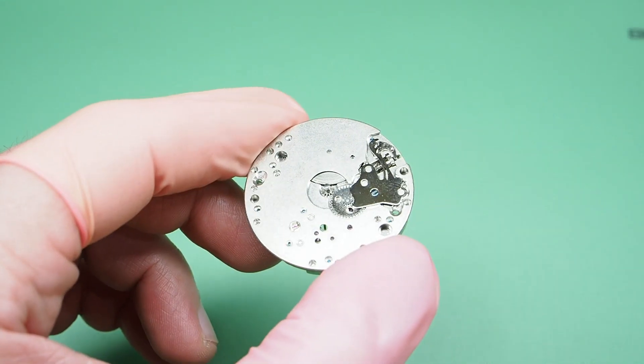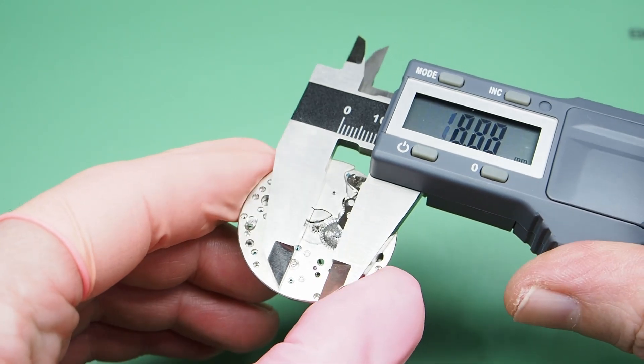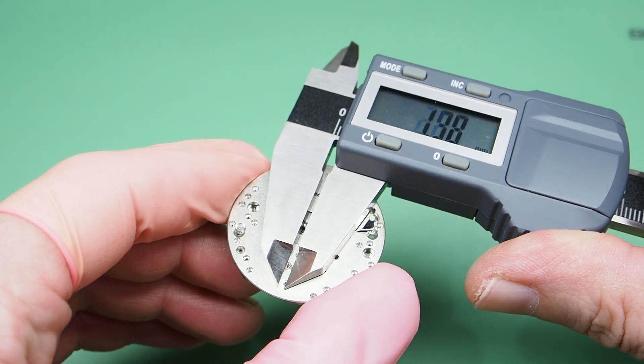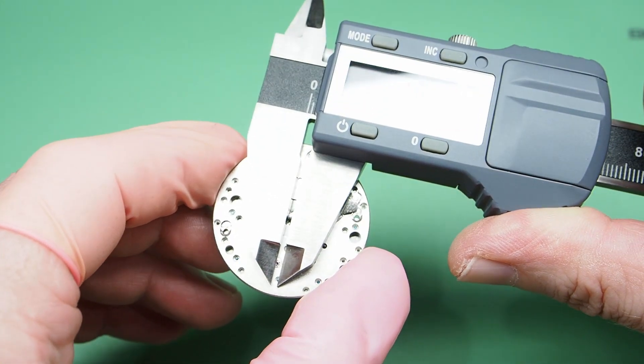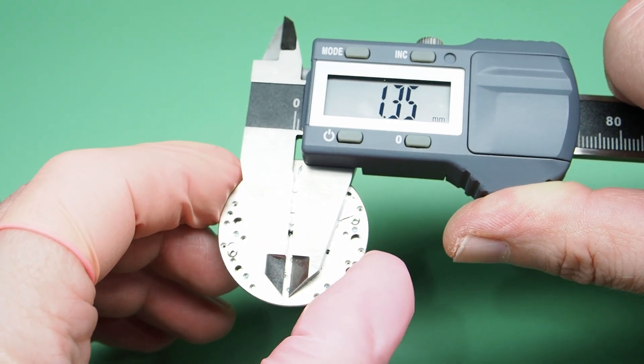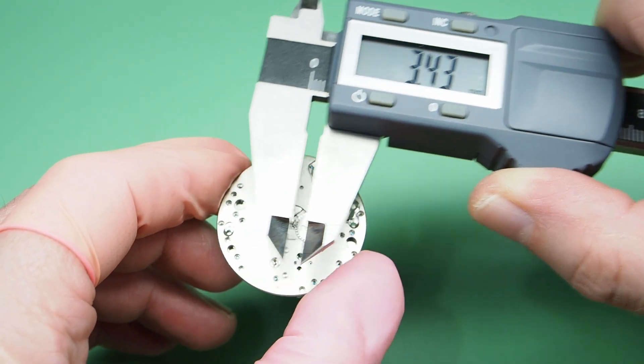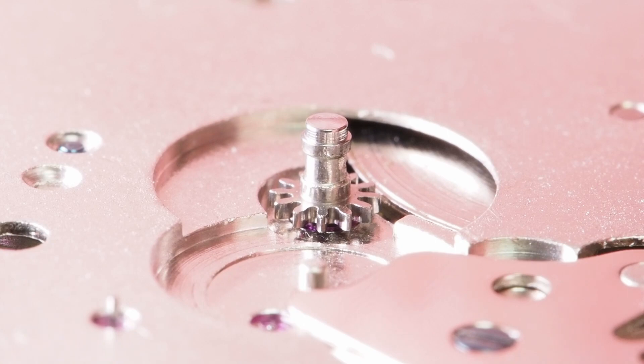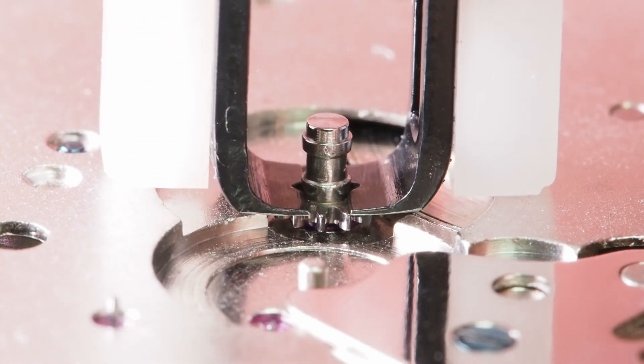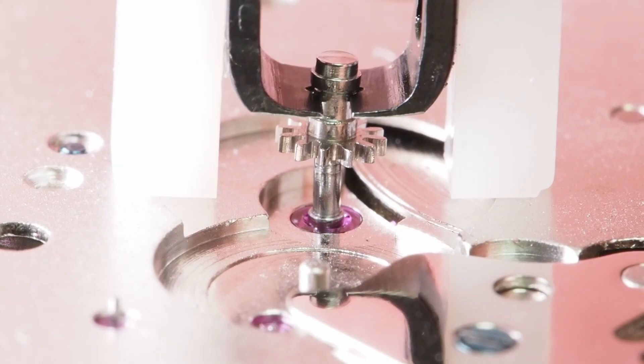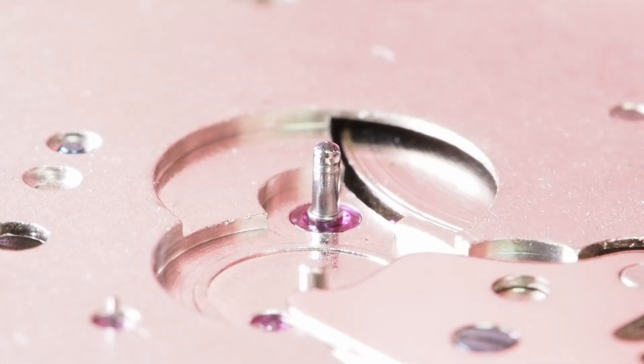We are going to remove two cannon pinions. This is the first one and I'll measure the diameter of the cannon pinion, which is 1.35 mm. We'll start with the Presto tool. And that lifts the cannon pinion effortlessly.